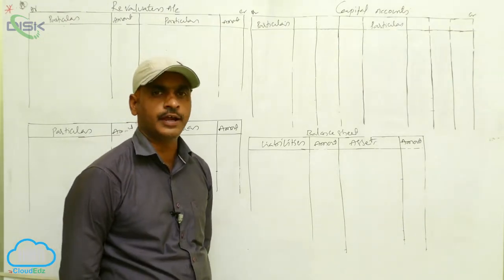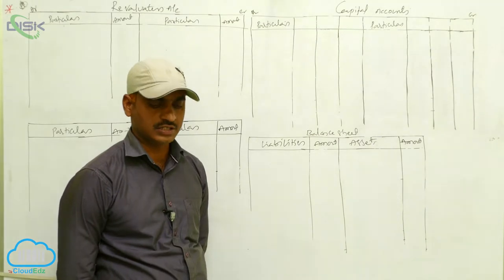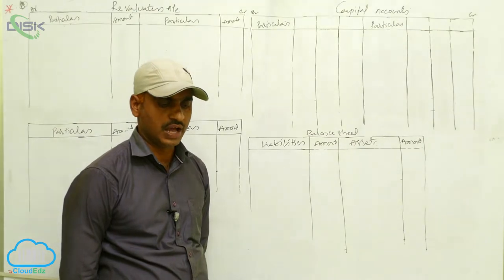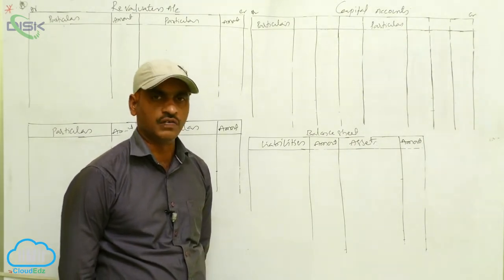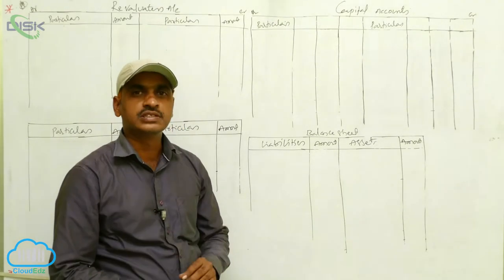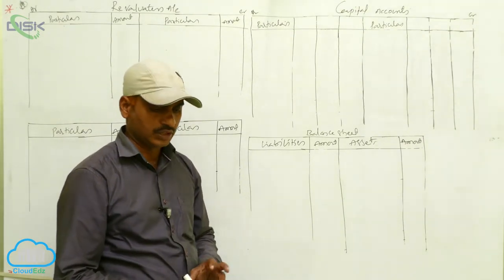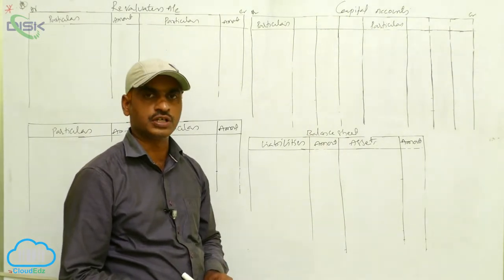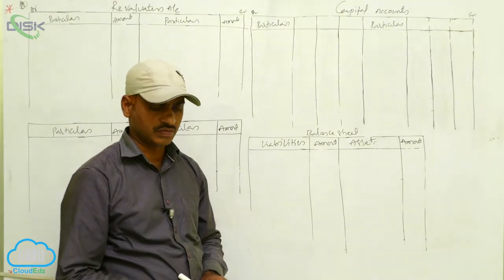Star, Sun, and Moon are partners sharing profits and losses in the ratio of 5:3:2 respectively. Their balance sheet as on 31st March 2015 is given. The three partners' capital accounts are: Star ₹50,000, Sun ₹40,000, and Moon ₹30,000. General reserve is ₹20,000.